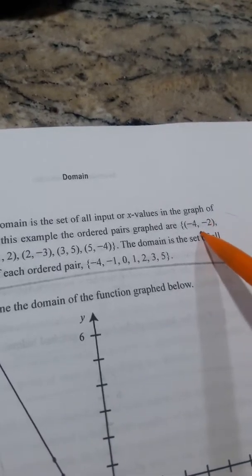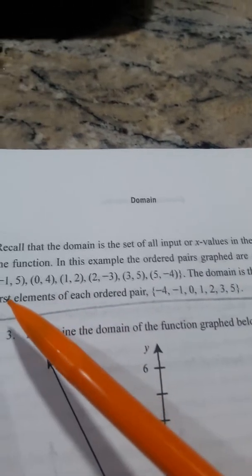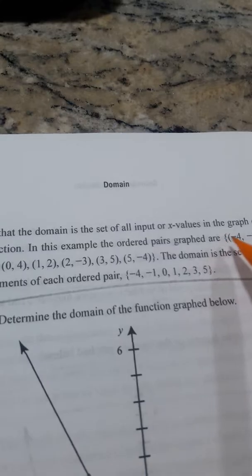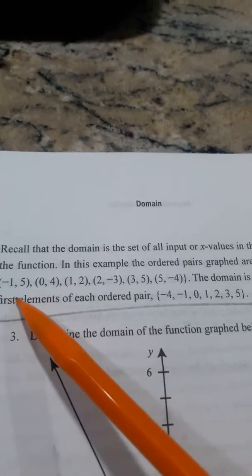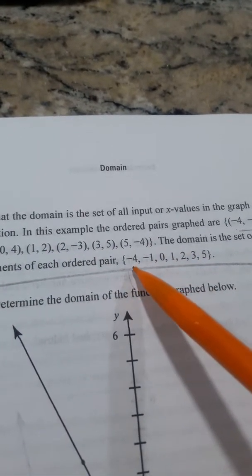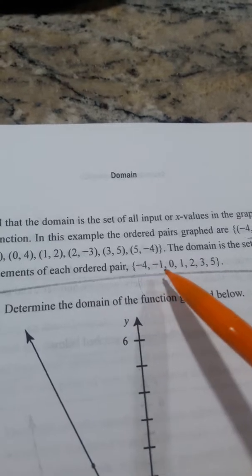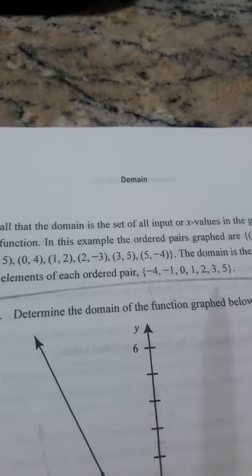Which is right there. And then if you found the other points in the graph, they'd be here. We just take the first number of each of these ordered pairs, and that's our domain. Negative 4, negative 1, 0. Because they're the first number of each of those ordered pairs.